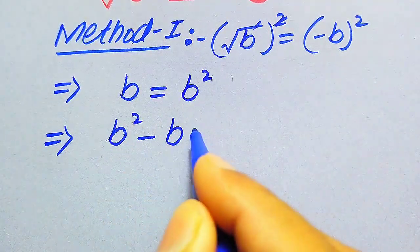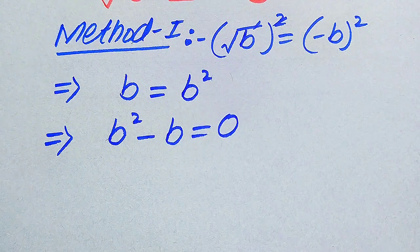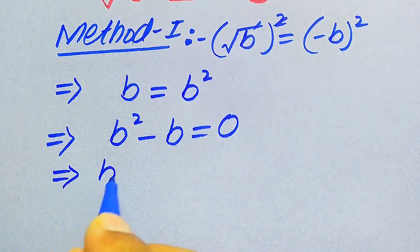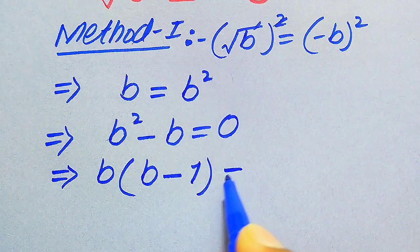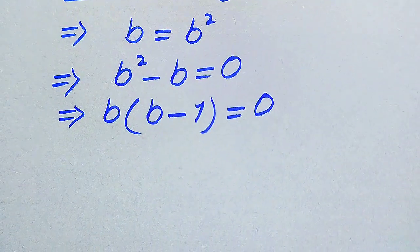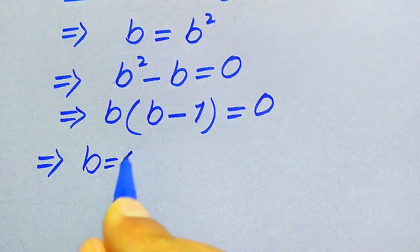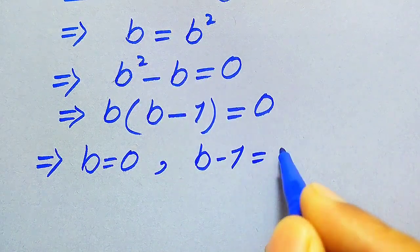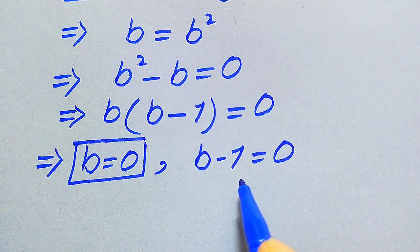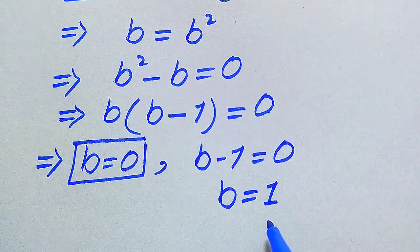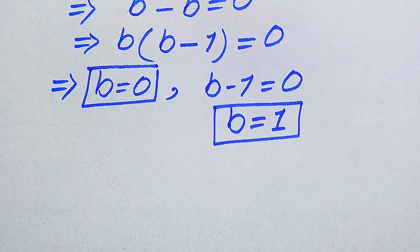In the next step, we move b from the left-hand side to the right-hand side, giving us b squared minus b equals zero. Both terms involve b, so we factor out b to get b times (b minus 1) equals zero. Dividing into two cases: the first case gives b equals zero, and the second case gives b minus 1 equals zero, so b equals one. These are the two roots of the equation.